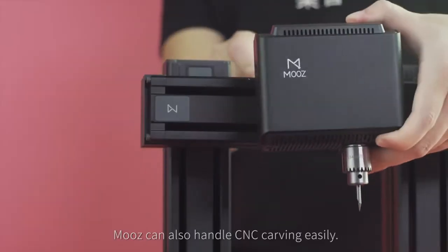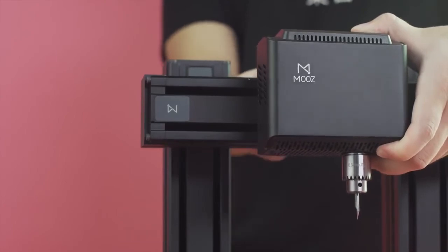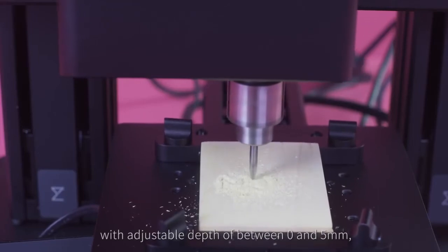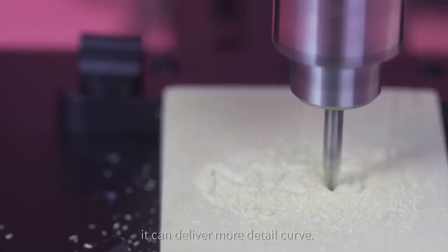Moose can also handle CNC carving easily. With adjustable depth of between 0 and 5 millimeters, it can deliver more detail curve.